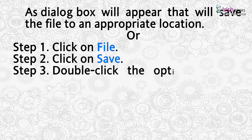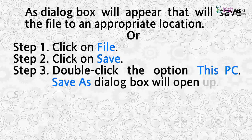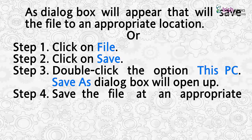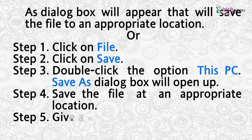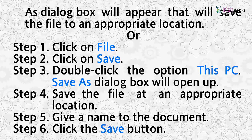Step 3, double-click the option This PC. The Save As dialog box will open up. Step 4, save the file at an appropriate location. Step 5, give a name to the document. Step 6, click the Save button.